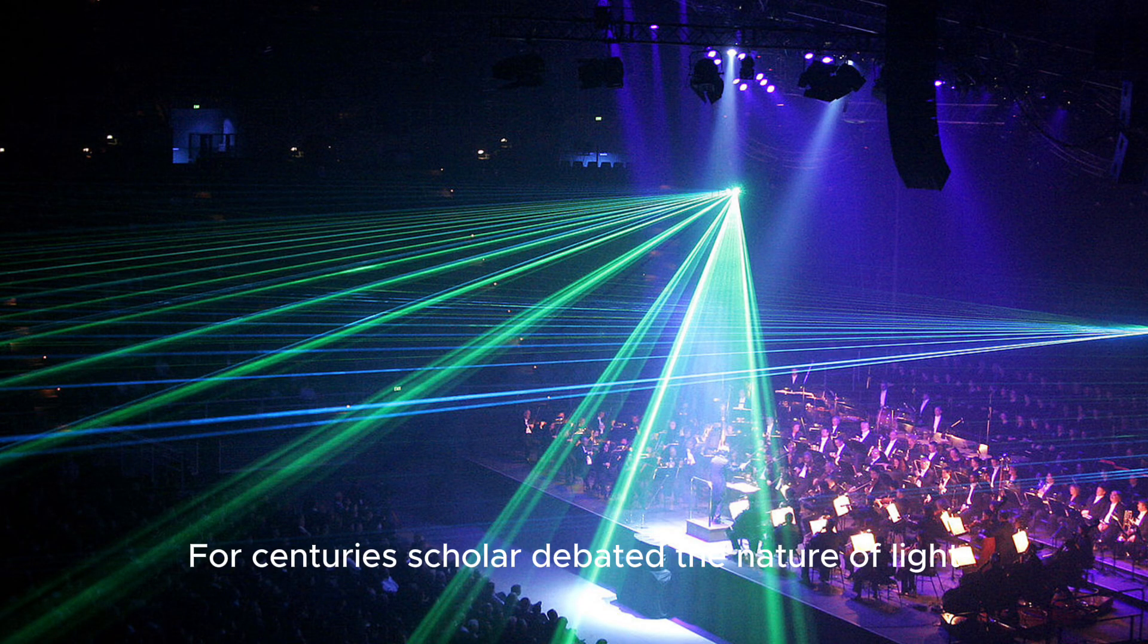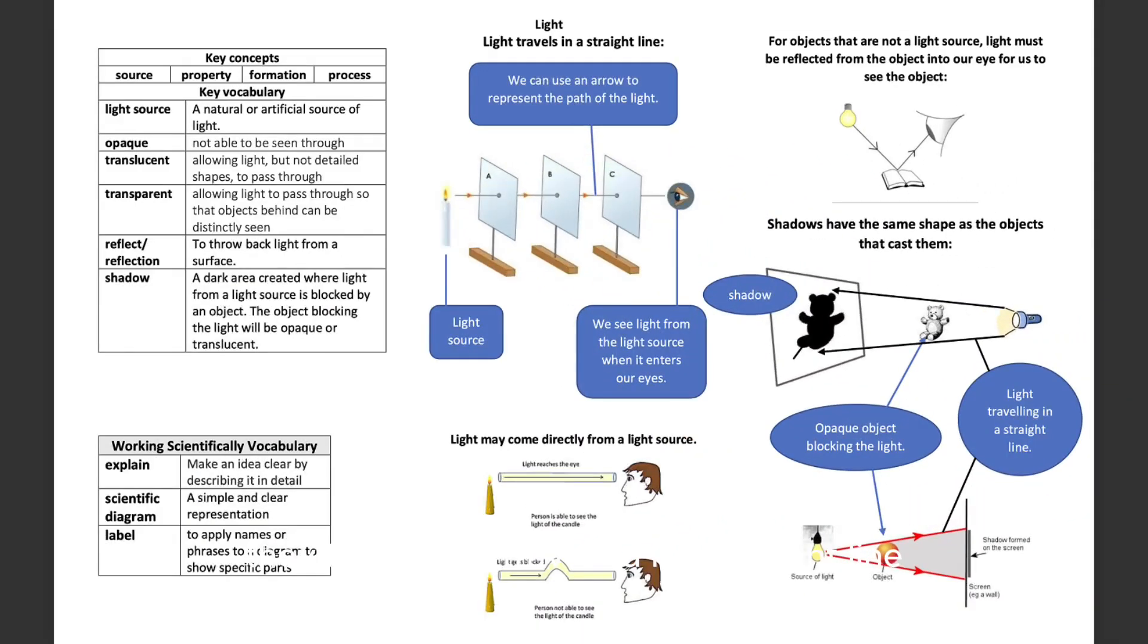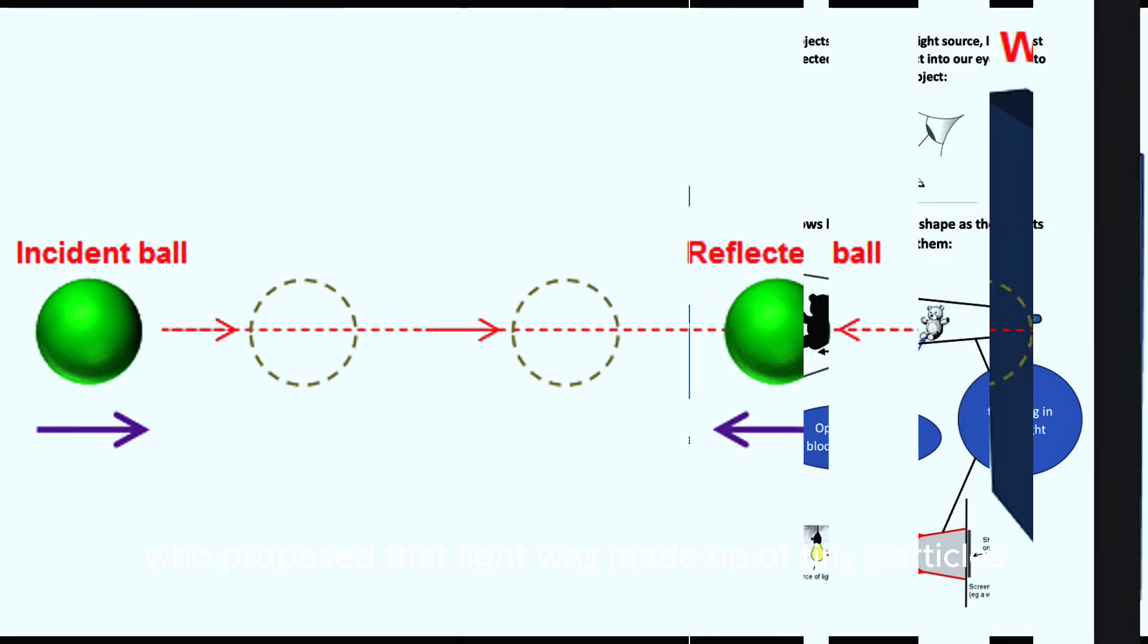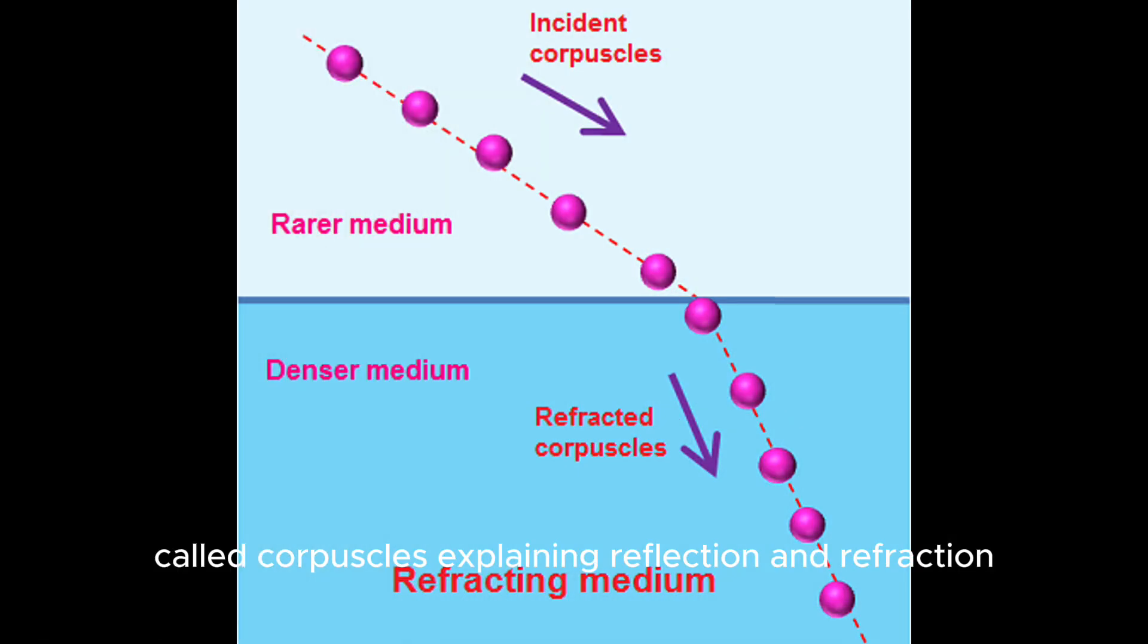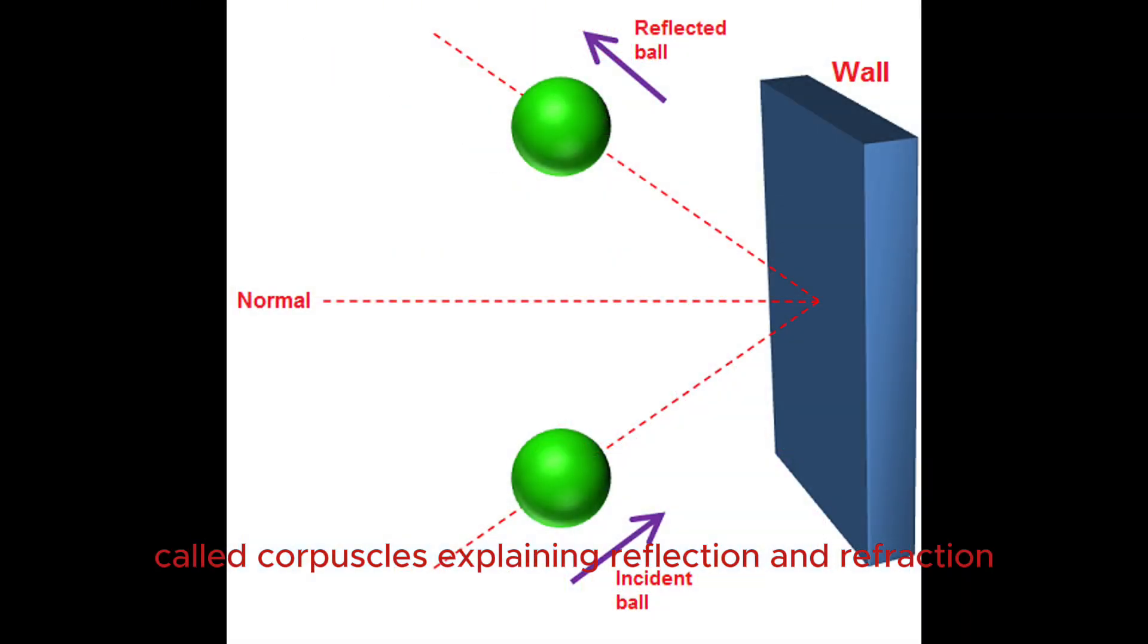For centuries, scholars debated the nature of light. They believed it traveled in a straight line. Then came Isaac Newton, who proposed that light was made up of tiny particles called corpuscles, explaining reflection and refraction.